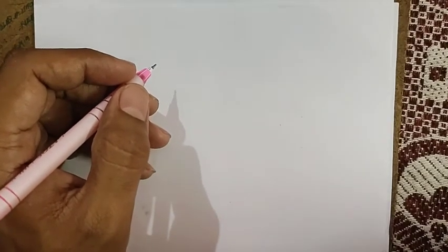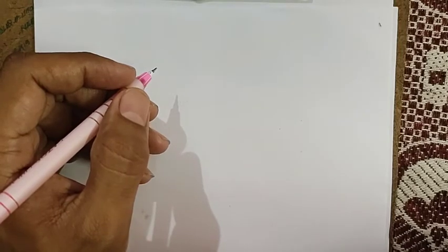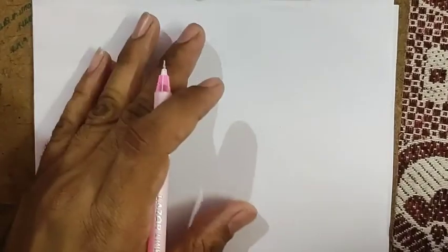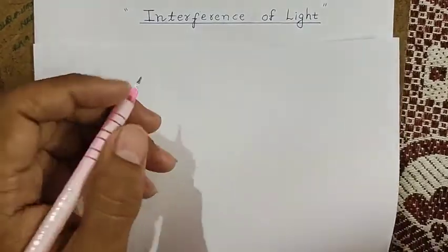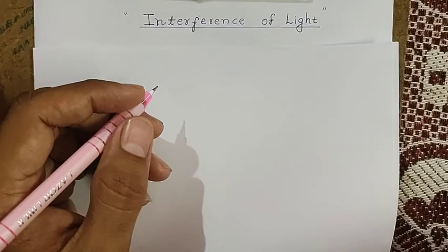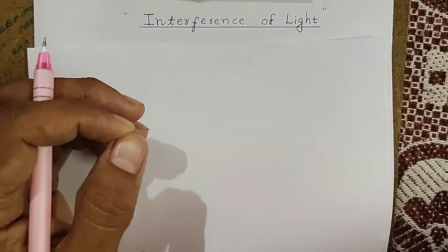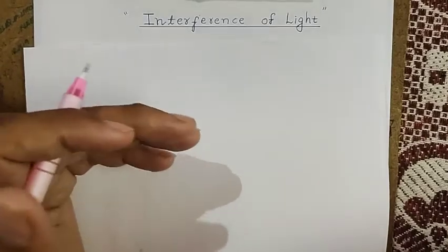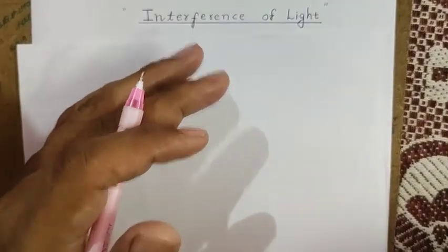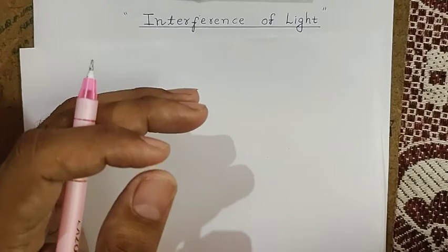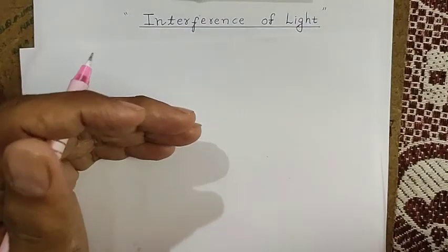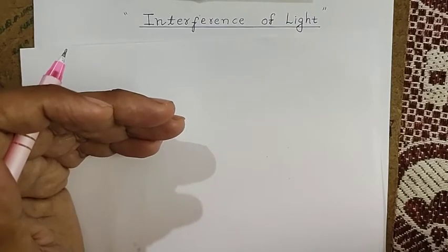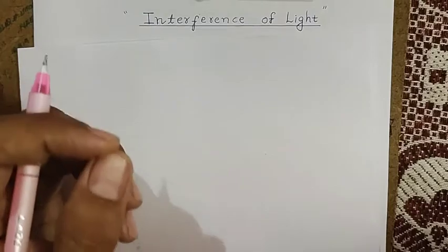Hello students, welcome to this new video. In this video we are going to revise one very small but important topic of class 12th standard physics. Today we are going to revise the topic of interference of light. It comes under the wave optics chapter of class 12th. Today I will try my level best to make this topic very clear, covering the basic theory, basic formulas, and also some extra shortcut tricks to solve MCQs for NEET and JEE exams.